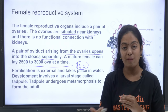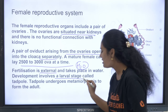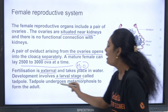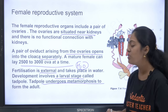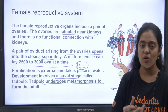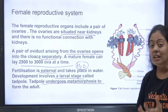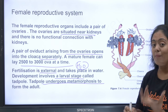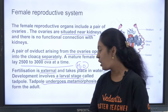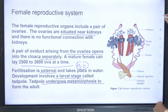Fertilization is external and usually happens in water. Development includes a larval stage — the tadpole undergoes metamorphosis to form the adult. The hormone involved in metamorphosis is thyroxin.